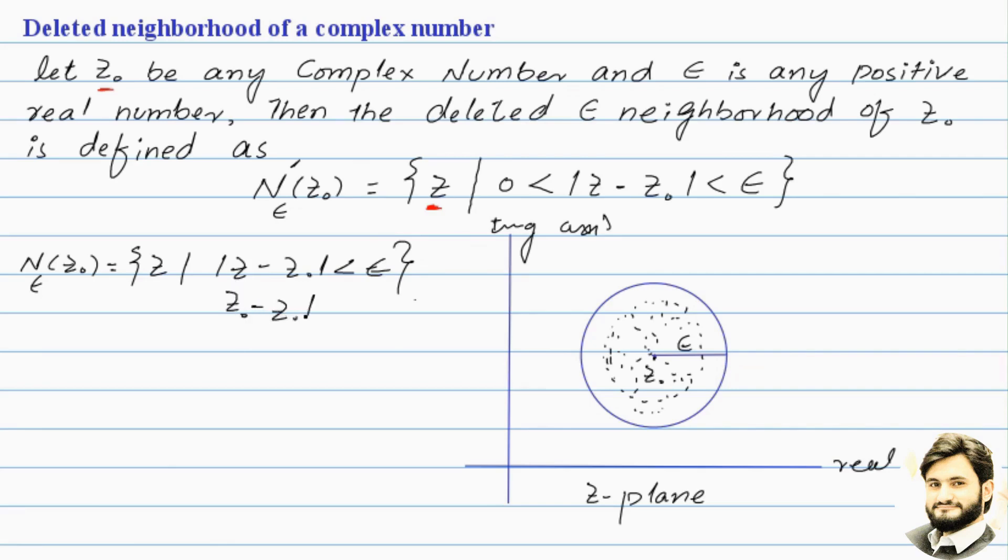z-naught minus z-naught is less than epsilon. So z-naught minus z-naught, which is 0, is less than epsilon. This condition is satisfied.